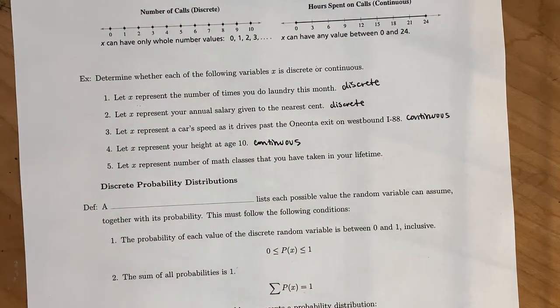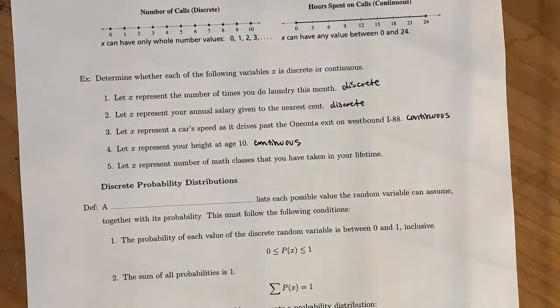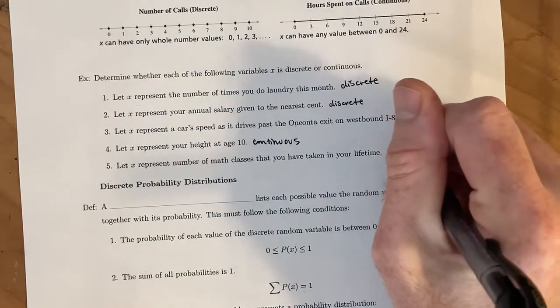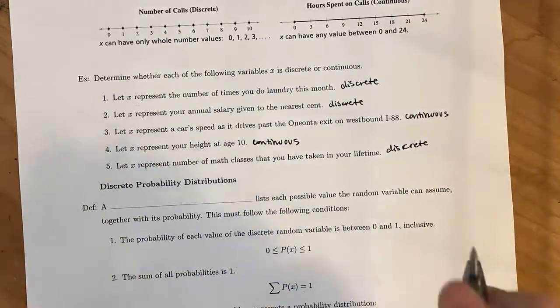And then lastly, x is going to represent the number of math classes that you have taken in your lifetime. Well, you've taken at least two math classes. And you take a full class, we're not going to count half classes. So this is an example of a discrete random variable.